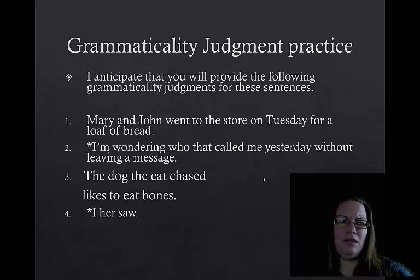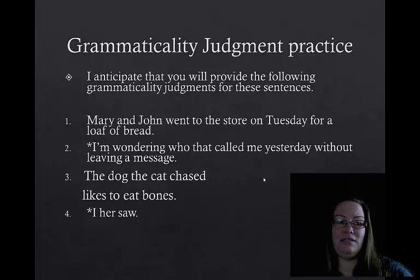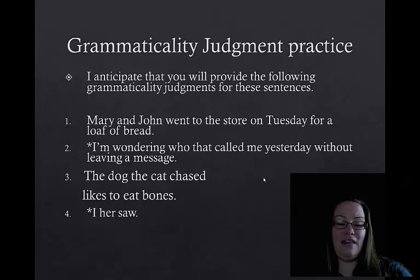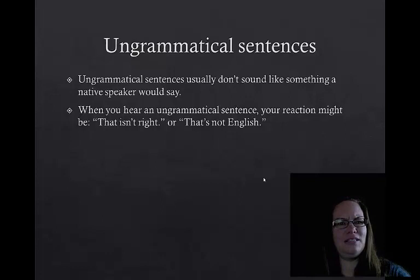Number one — Mary and John went to the store — is an acceptable sentence based on your mental grammar. Number two is ungrammatical. Number three is trickier: the sentence is grammatical based on its structure, though some may find the meaning unusual since it's the cat chasing the dog. Number four — I, her, saw — is incorrect because English doesn't use that word order. Ungrammatical sentences don't sound like something a native speaker would say; your reaction is something like, 'I don't think that's right.'